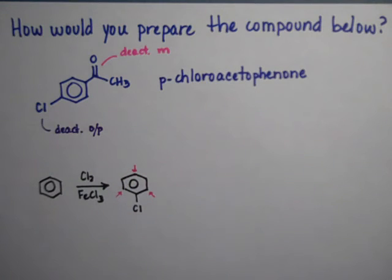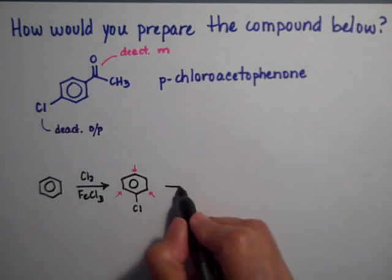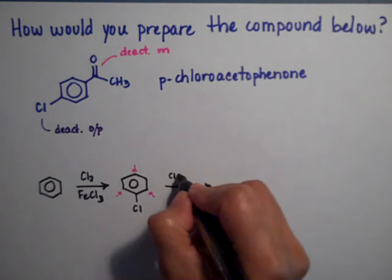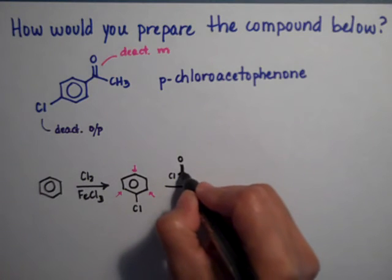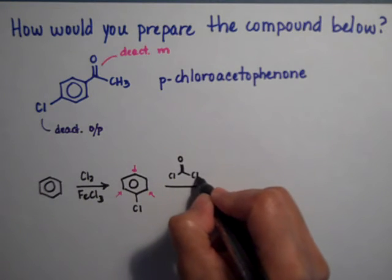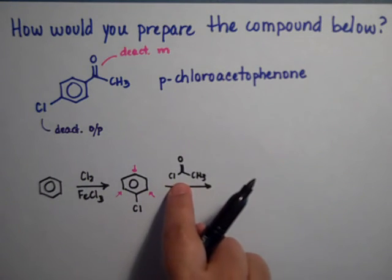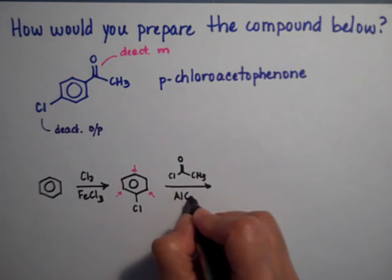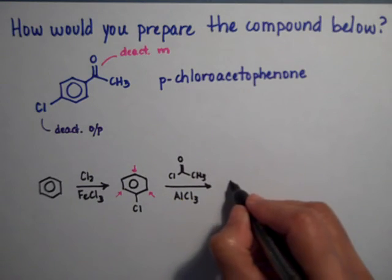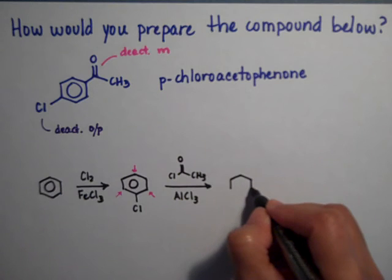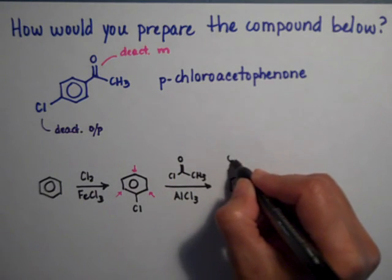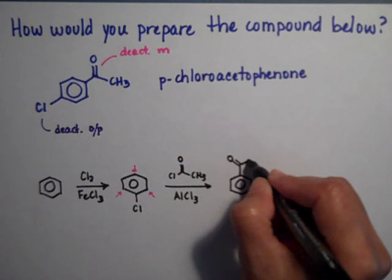So when I do the Friedel-Crafts reaction, since the group I'm actually putting on is quite bulky, it's going to prefer to go to the para position. So I need the acyl chloride and I also need the catalyst aluminum trichloride, and the major product of this reaction is going to be the para-chloroacetophenone.